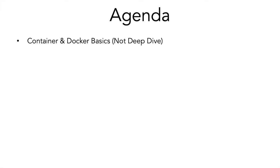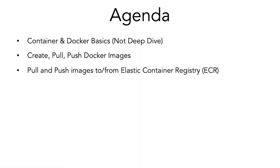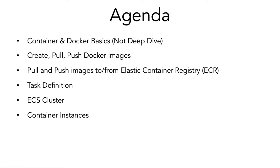This will be our agenda. I'll tell you about container and Docker basics, though I won't take a deep dive into containers itself. Then you'll see how to create, pull, and push Docker images using Docker commands. Then you'll see how to push and pull images from Elastic Container Registry or ECR, which is a private Docker registry provided by AWS ECS. Then you'll see what ECS task definitions are, ECS clusters, what container instances are, and how services play a very important role in ECS. And finally, you will see ECS Fargate, which is a serverless implementation of AWS ECS — basically without any server.